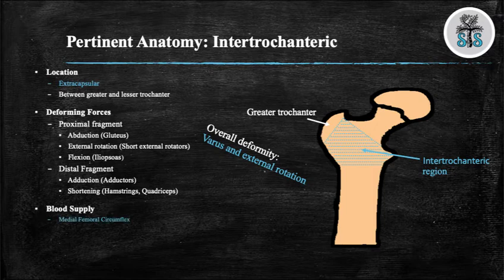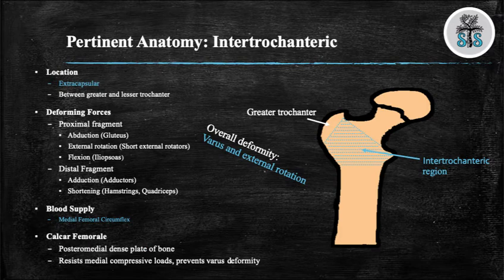The major blood supply is the lateral epiphyseal artery of the medial femoral circumflex. The calcar is located on the posterior medial aspect and contains a dense plate of bone. The calcar provides support to the femoral neck as it is a transitional area to transfer stress from the trabecular bone of the femoral head and neck to the cortical bone of the femoral shaft. The calcar resists compressive loads and prevents overall varus deformity.